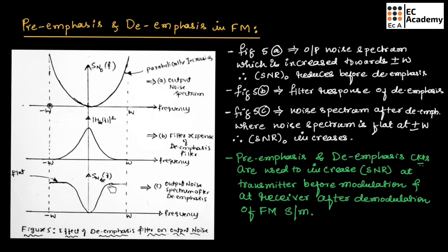After de-emphasis, the noise is flat at minus W and plus W. Therefore, the signal-to-noise ratio will increase due to the de-emphasis filter, because the noise becomes flat. You need to remember that pre-emphasis and de-emphasis circuits are used to increase the signal-to-noise ratio — pre-emphasis at the transmitter before modulation, and de-emphasis at the receiver after demodulation, in an FM system.